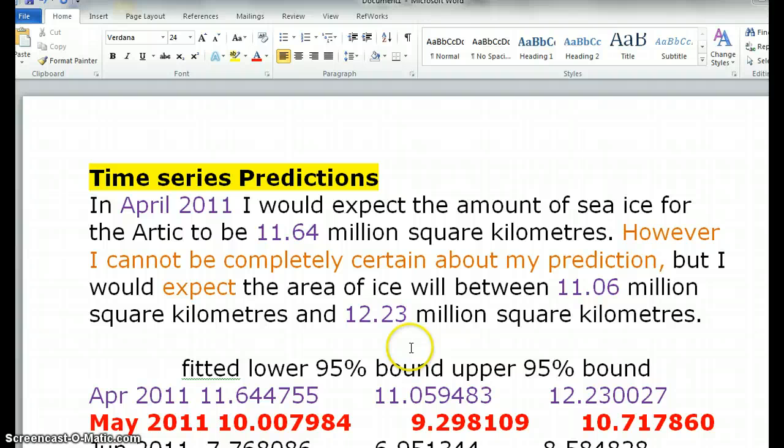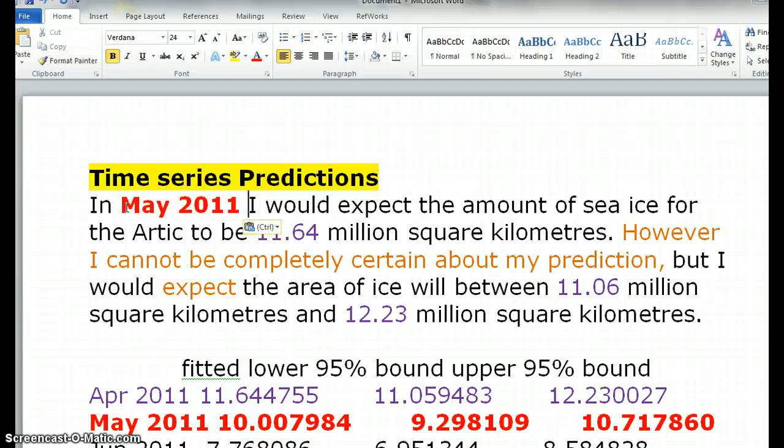I've got the April 2011 one. If I was now to change that to May, I'd say in May 2011, I would expect the amount of sea ice for the Arctic to be—now with this, I'll just round it to 10.01. So I'm rounding to 10.01 million square kilometres.